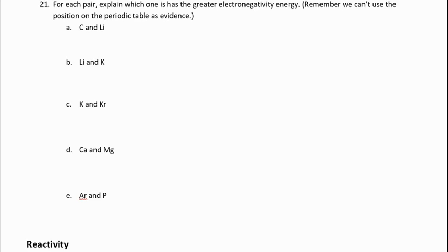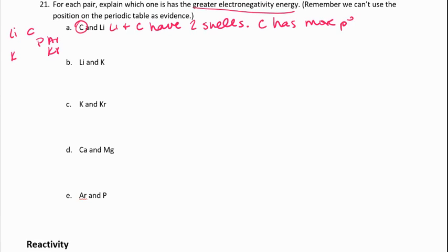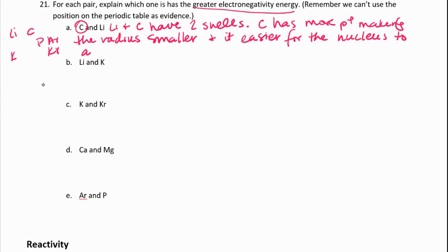So if we look at these same sets of elements, if we think about lithium and carbon, and we're trying to find the one with the greater electronegativity, carbon is going to have the greater electronegativity because lithium and carbon both have two shells. Carbon has more protons, making the radius smaller, and it's easier for the nucleus to attract electrons.